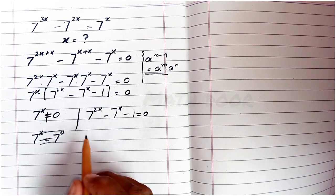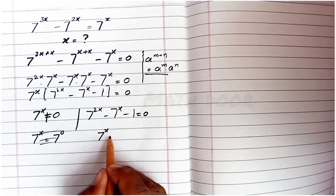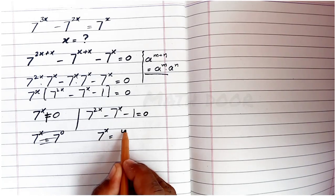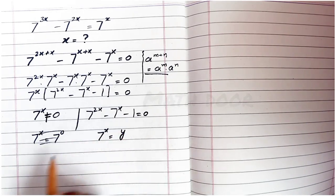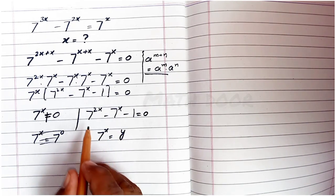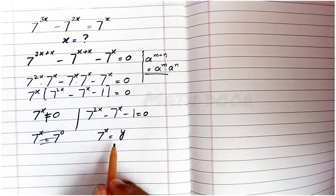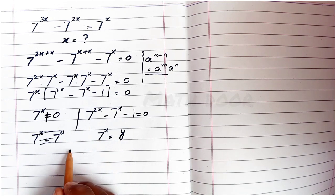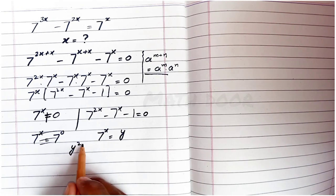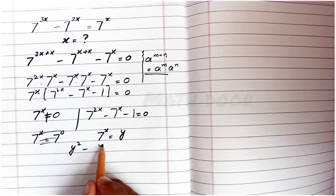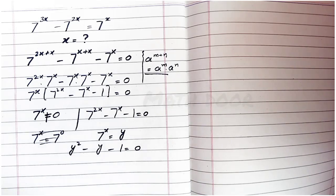We substitute y for 7 power x, so the value of 7 power x is equal to y. The second equation then becomes y squared minus y minus 1 is equal to 0.